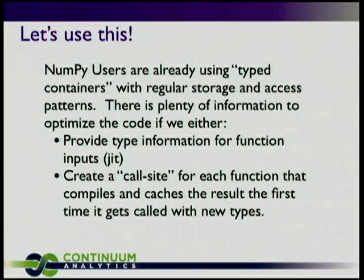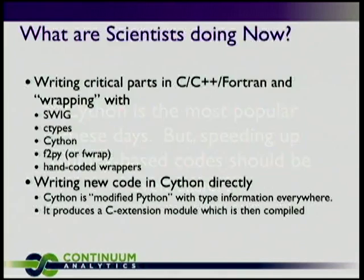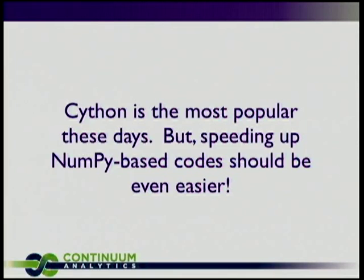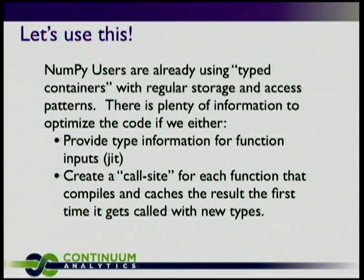Here's the idea: NumPy users are already using typed information — typed containers, regular storage, regular access patterns. There's plenty of information there for a compiler, if you do one of two things. Either provide a little type information about a function's arguments — for example, K is a 2D NumPy array of doubles and A is a 1D array of doubles — and a compiler can produce optimal code. Or do a 'call site' approach: just wait and see what the types are when the function is called, then generate code at that point along with a little type inference for output types.